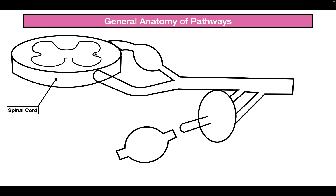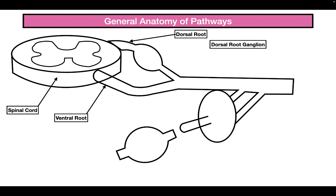Coming off of the spinal cord we have a few roots. The first is the ventral root and the second is the dorsal root. The ventral root comes from the front of the spinal cord and the dorsal root comes from the back. We also see the dorsal root ganglion, which we'll talk about in a little bit. Both the ventral and dorsal root come and fuse together into the peripheral nerve.